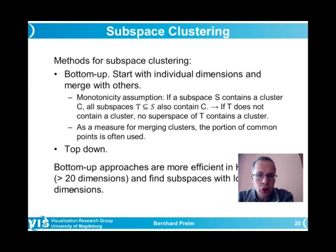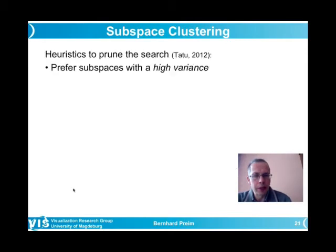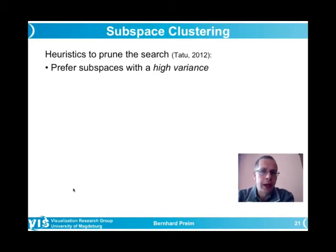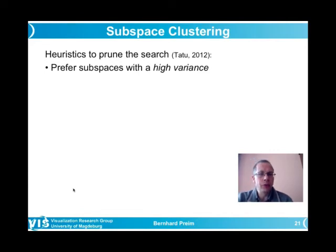Clusters are merged if they share many points and the same dimensions. Bottom-up approaches are more efficient than top-down and are much more frequently used, particularly for more than around 20 dimensions. Search pruning strategies include preferring subspaces with high variance — if all values in a dimension are nearly the same, this dimension should not be part of an interesting subspace.